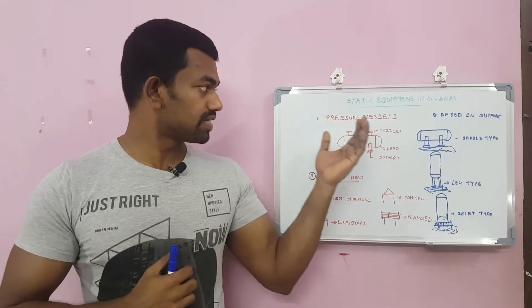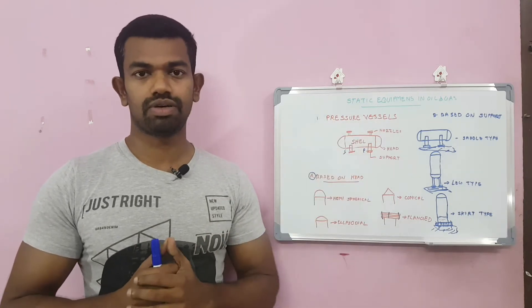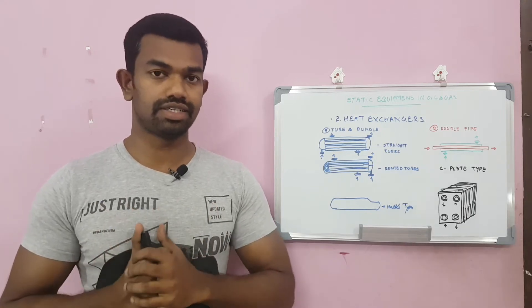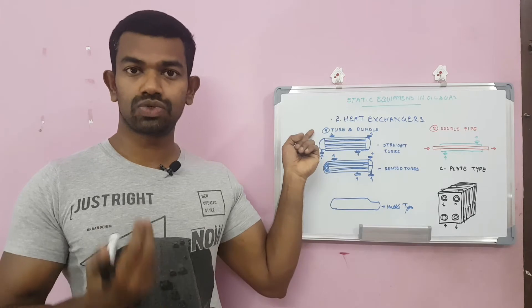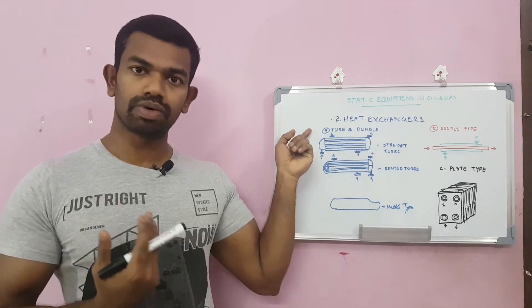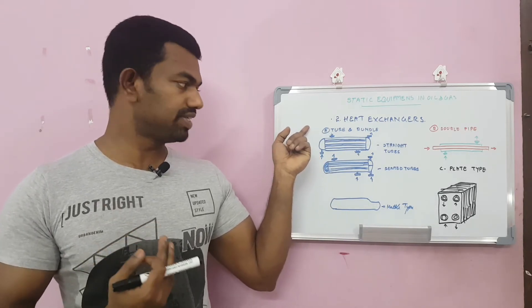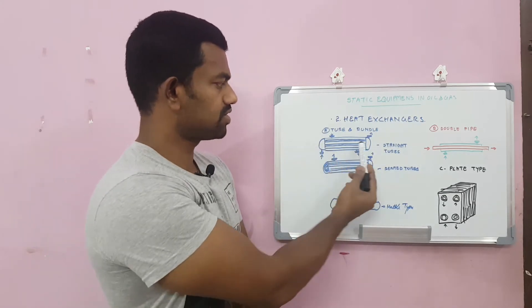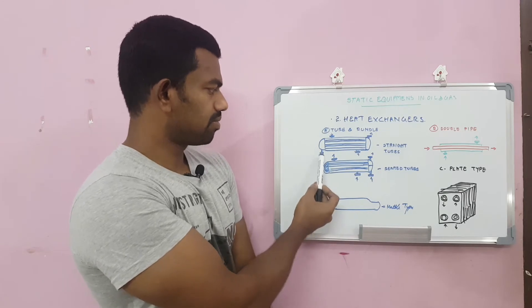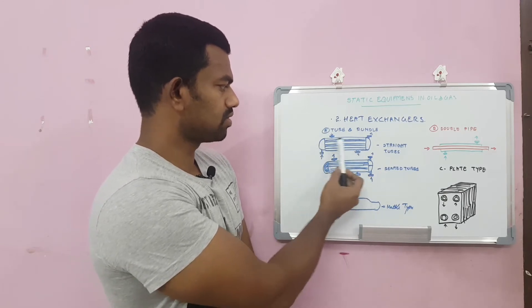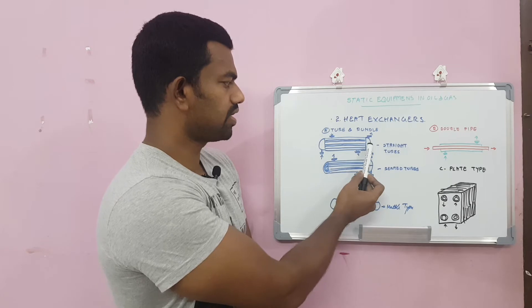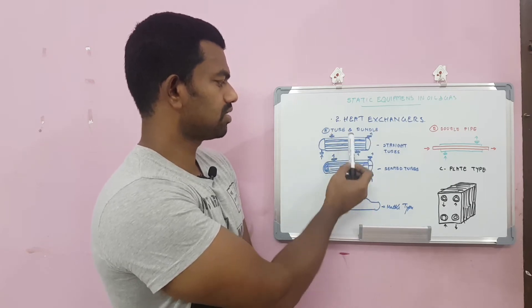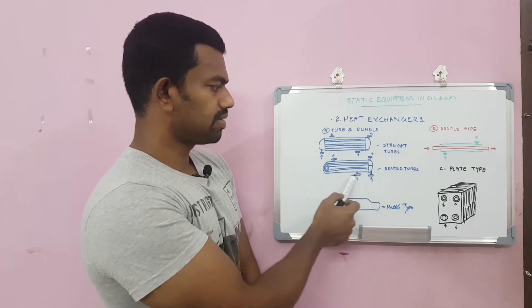Now let's see what are the heat exchangers. First one is tube and bundle type. In tube and bundle type there are three subdivisions. Straight tubes - as the name indicates, the tubes are straight. The cooling liquid is coming from here, passing through all these tubes and going out the same way. Other fluids will enter from here and go out.